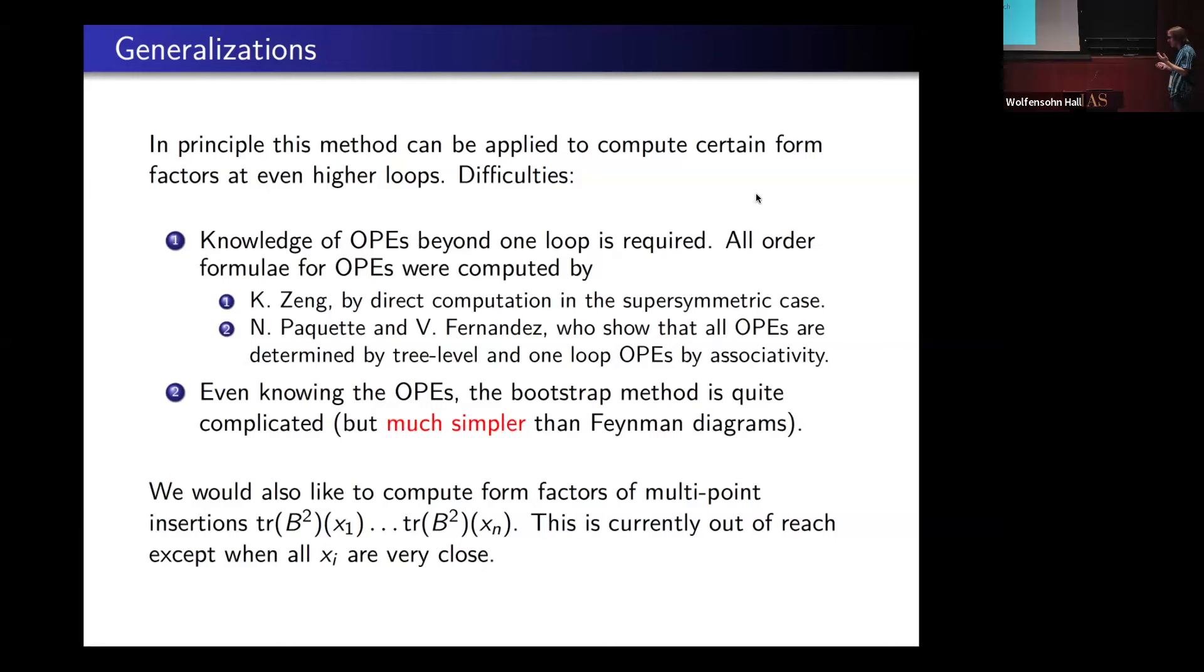It's not too complicated that I couldn't implement it on pencil and paper. But it's complicated enough that I wouldn't want to go further with pencil and paper personally, although maybe other people would. Of course, it's infinitely simpler than Feynman diagrams. There's really no serious obstruction to computing, say, three-loop form factors of trace B cubed, except somebody having the energy to do it. What we'd really like to do is compute what happens with multipoint insertions. That's currently out of reach.